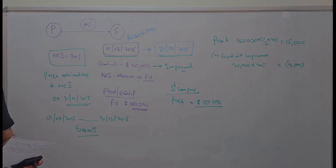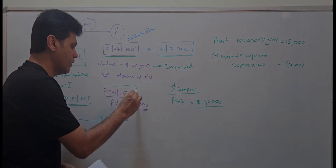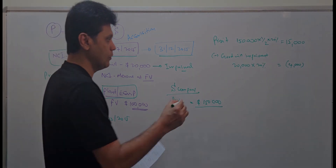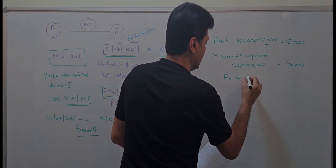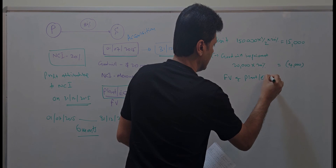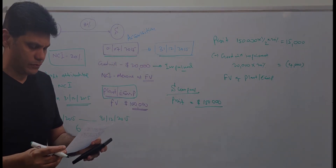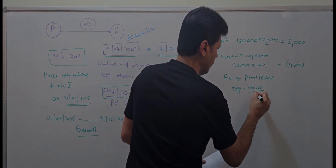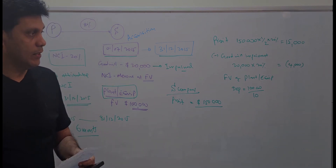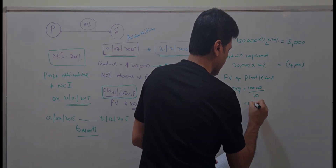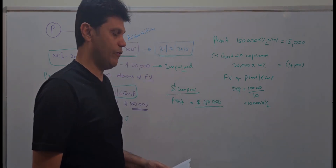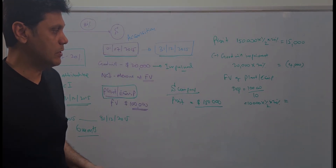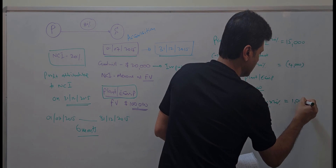The second adjustment is for the fair value of plant and equipment not recorded in S company. The excess fair value is 100,000 with a remaining useful life of 10 years, giving annual depreciation of 10,000. The half-year depreciation is 5,000, and the NCI's 20% share of that is 1,000.